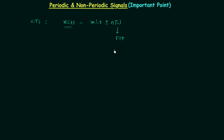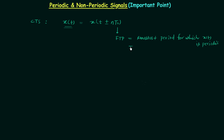The fundamental time period T0 is the smallest positive value of time for which the signal x(t) is periodic. It should not be equal to zero and should not be equal to infinity — it must be positive. This is the definition of fundamental time period, which we already discussed in the last presentation.